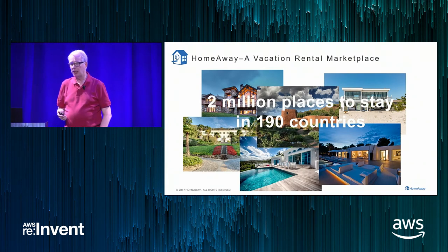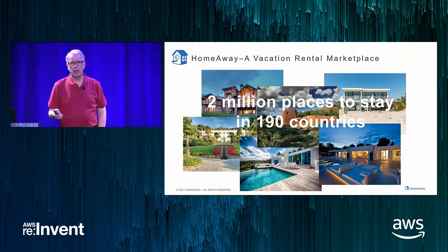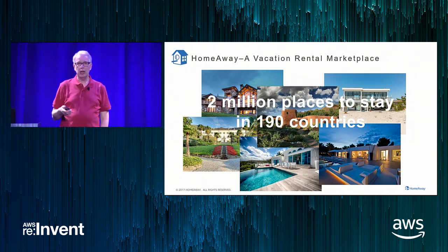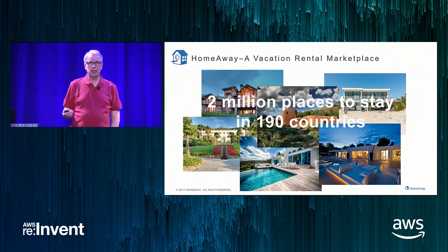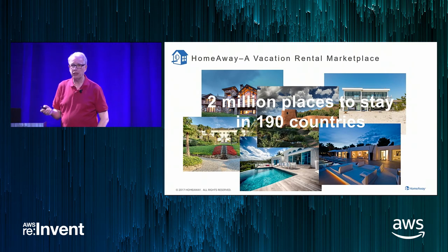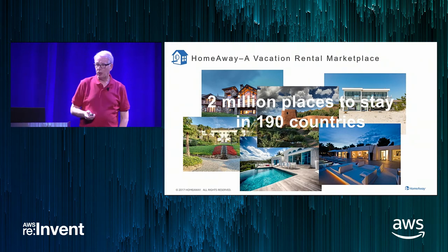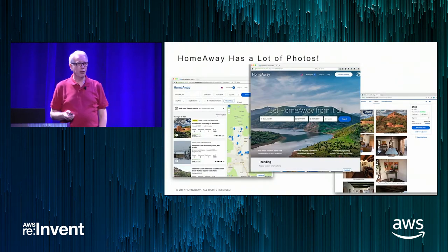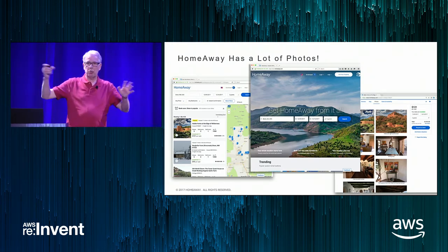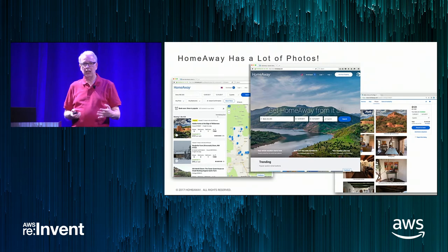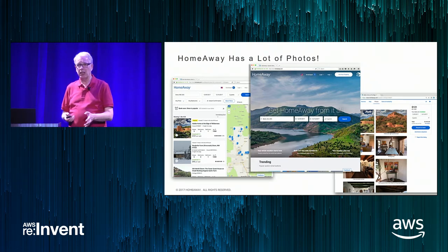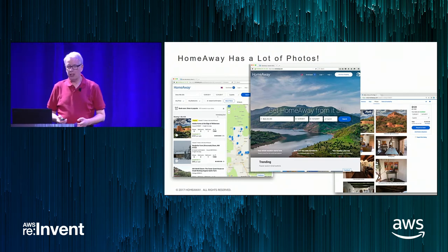HomeAway is a vacation rental marketplace — a place where travelers can find somewhere to stay and where owners and property managers can advertise their properties. We have two million different unique places you can stay at all around the world. We have a lot of photos: hero images, the big splashy images about a destination, and property images. Each property can now have up to 50 images each, so the math is a lot of photos.